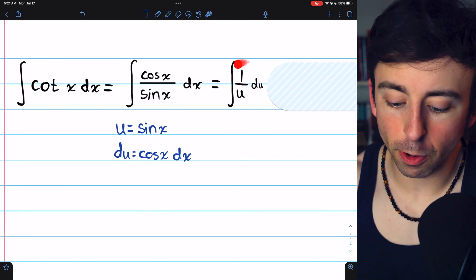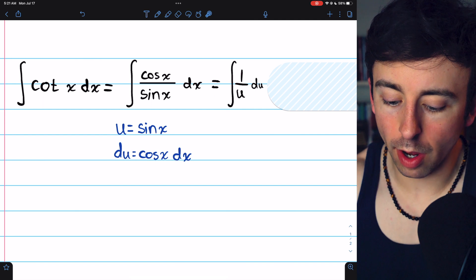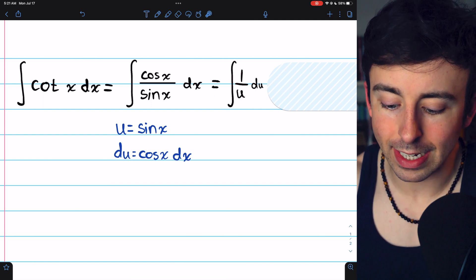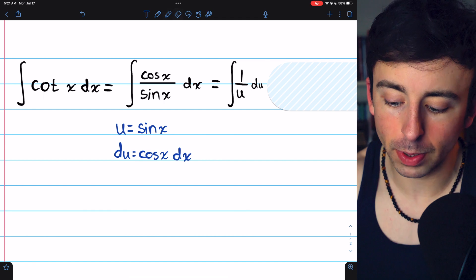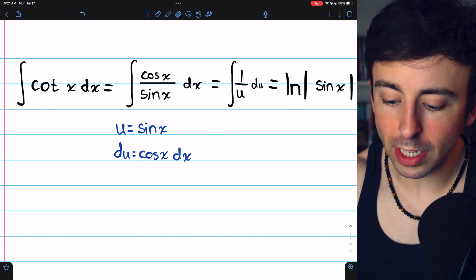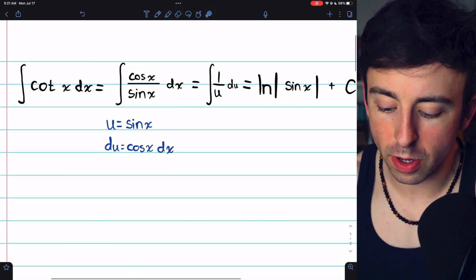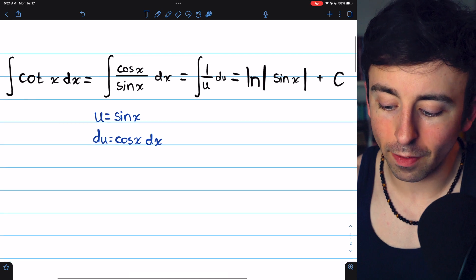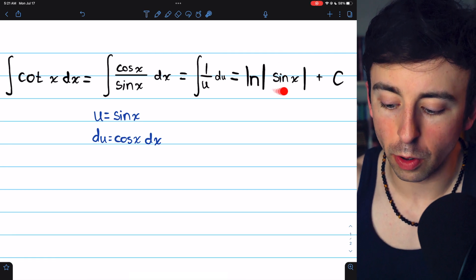Then, rewriting the integral, we have the integral of 1 over u du. Cosine x dx was entirely replaced by du, and hopefully you recall the integral of 1 over u is the natural log of the absolute value of u.